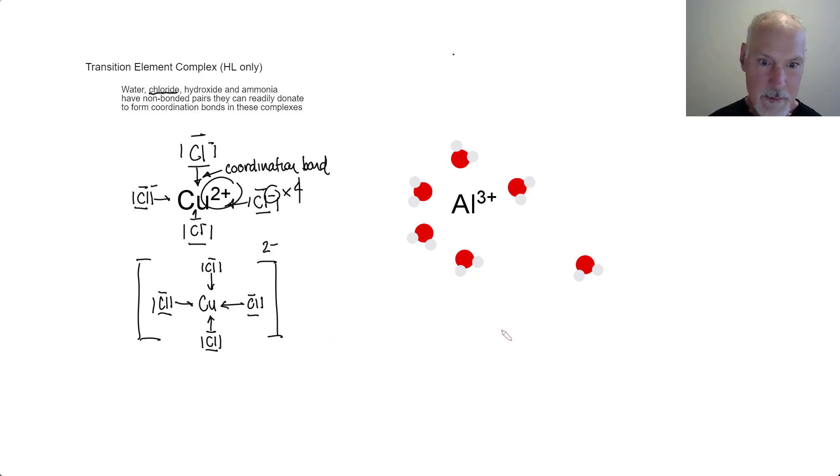Let's look at an example of another transition metal complex. Here I have aluminum in the center and a water molecule. For example, water molecules have two unbonded pairs of electrons.